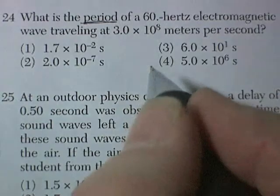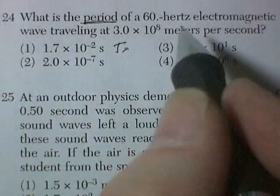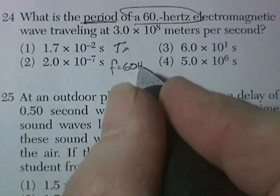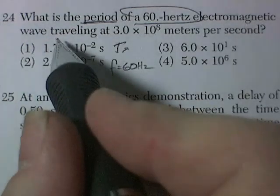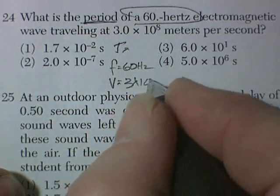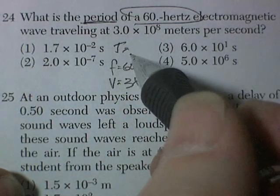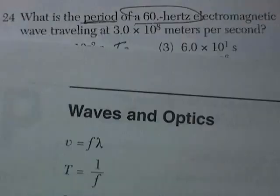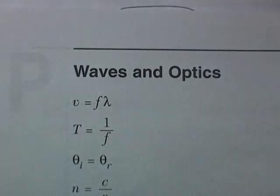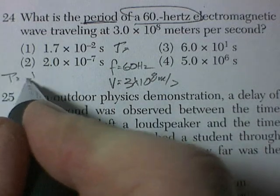What is the period of a 60 hertz electromagnetic wave? 60 hertz, and that's the frequency. And traveling at 3 times 10 to the 8 meters per second. So do I have a formula that has period, frequency, and velocity? Well, look at this. I got one that has period is 1 over frequency. That's easy.